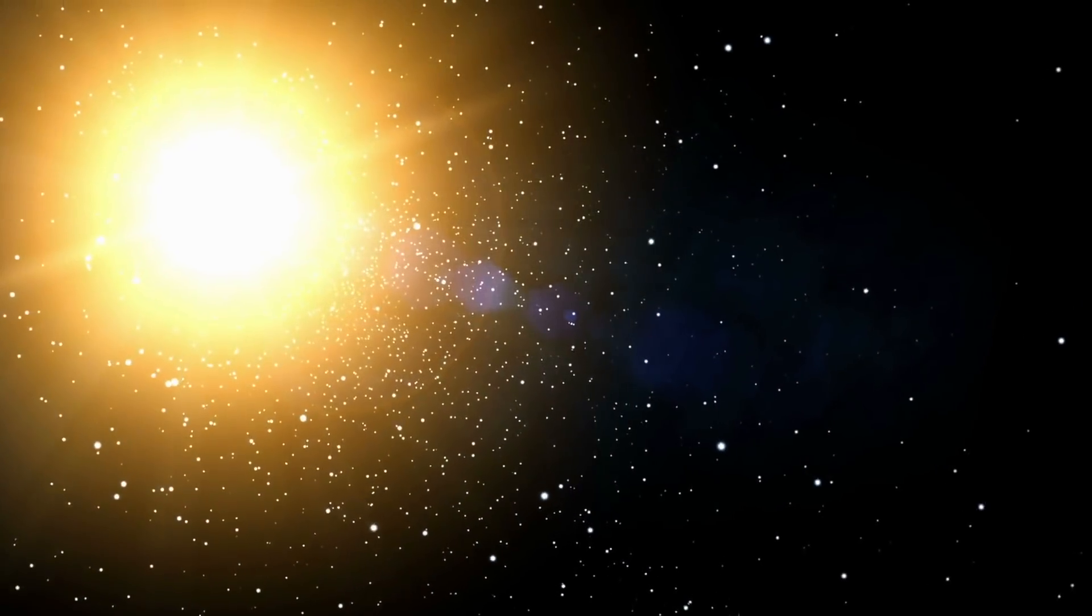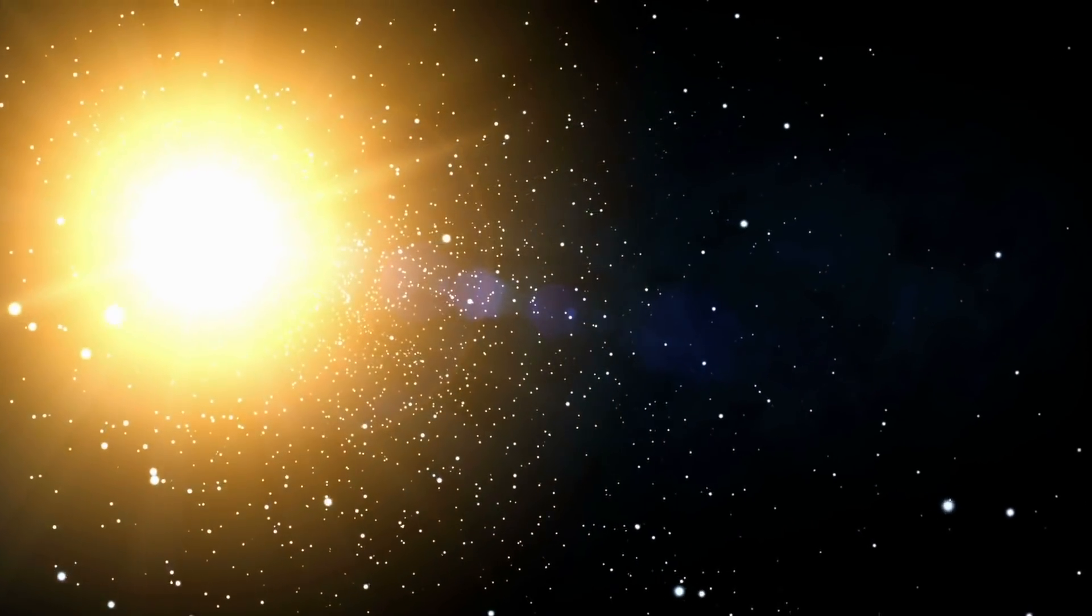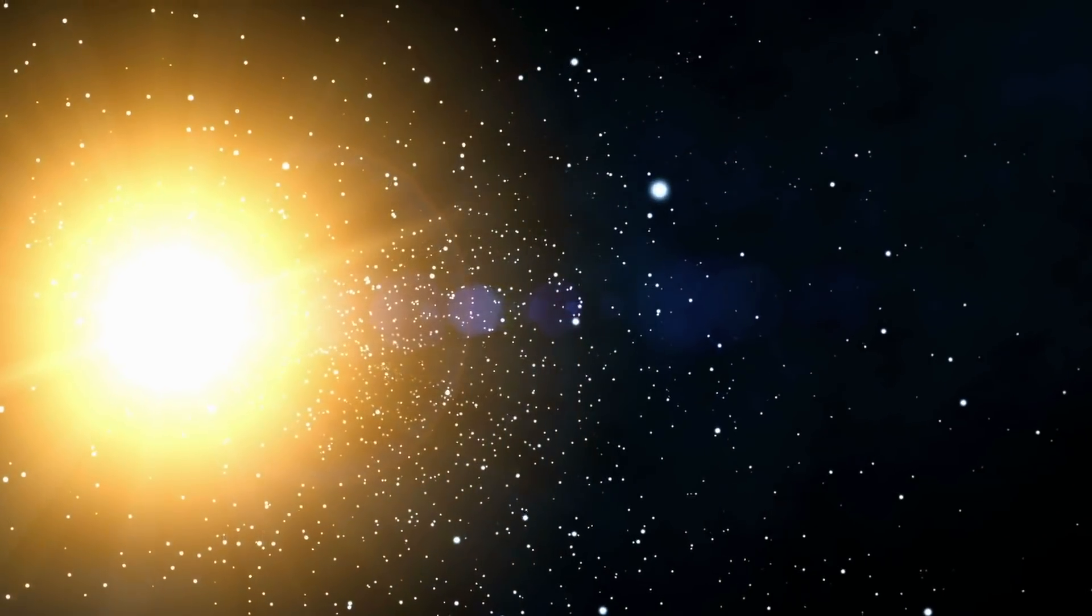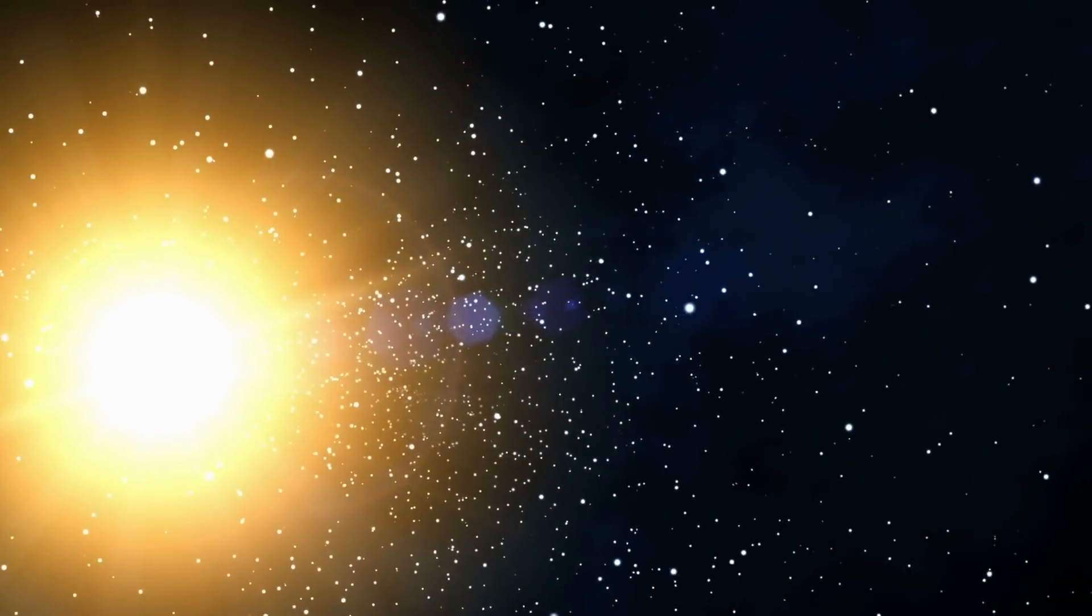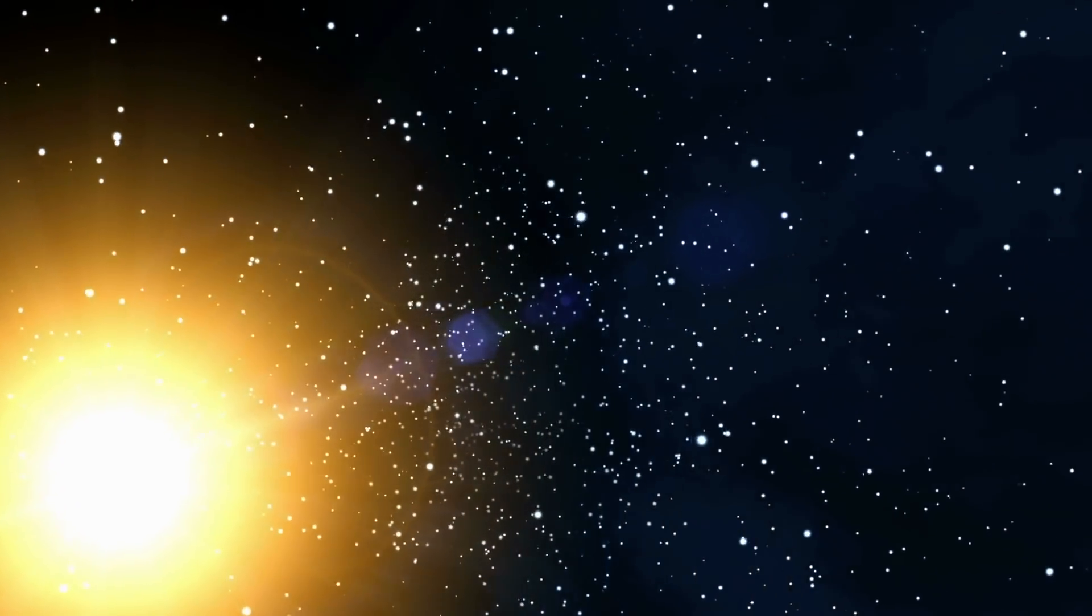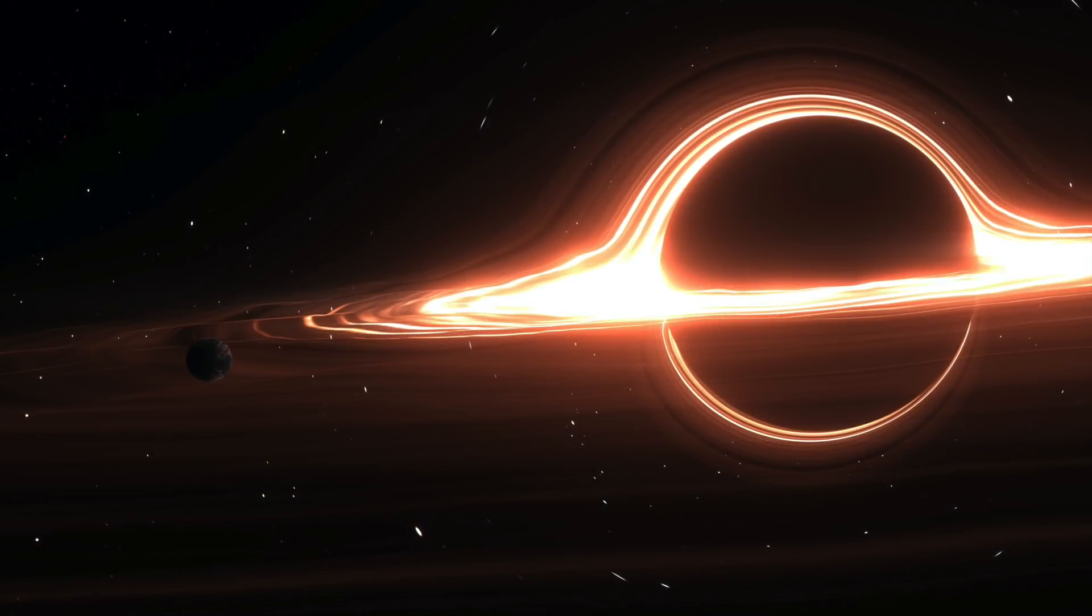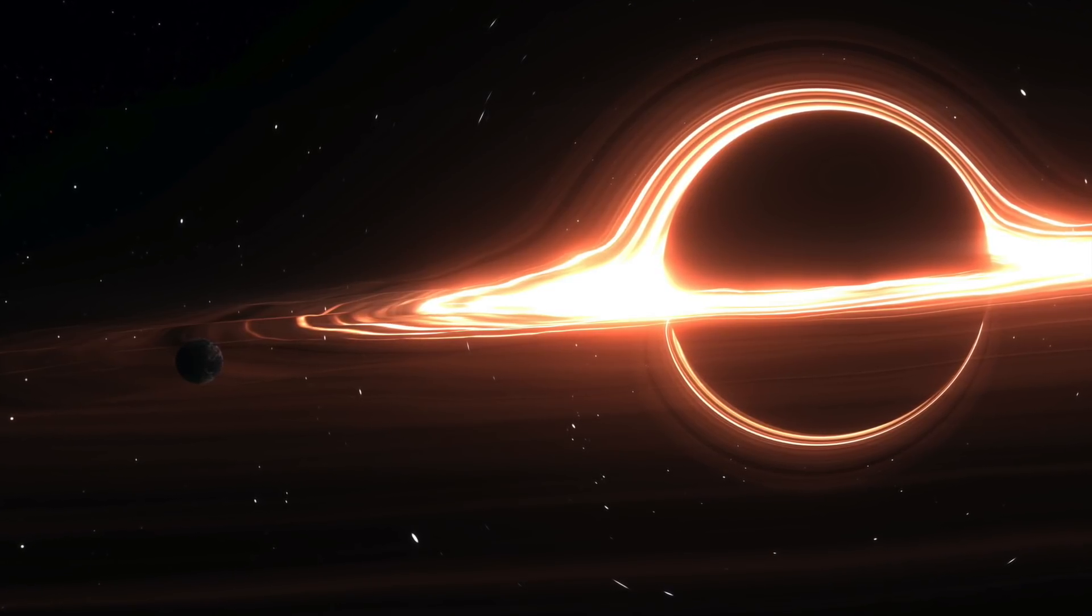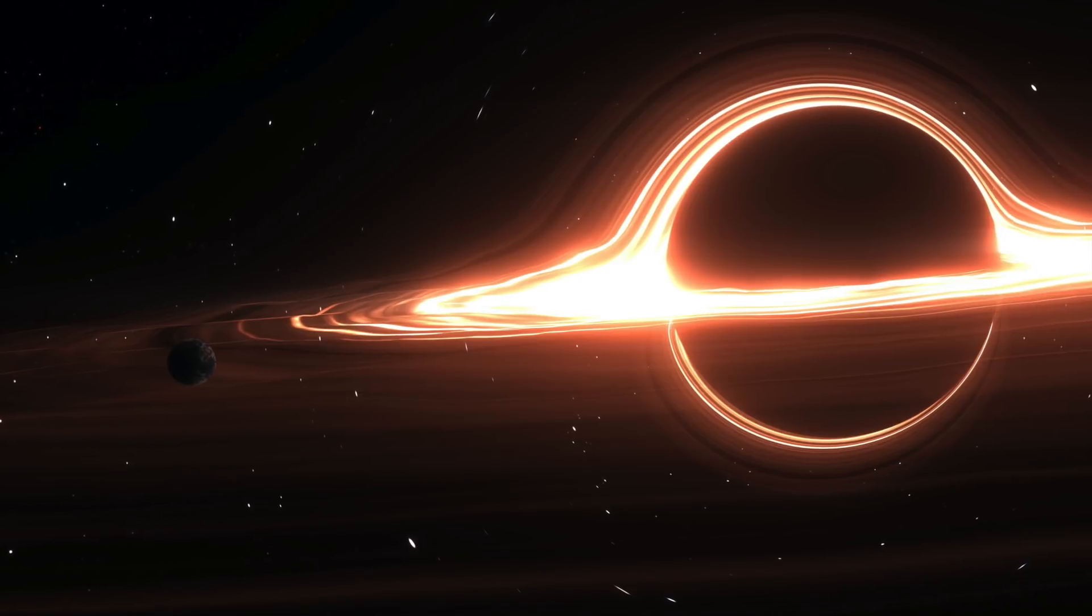We now know that J2157 is actually 34 billion times the mass of our Sun. For comparison, the Milky Way is home to the supermassive black hole Sagittarius A-star. Our black hole is a meagre 4.2 million solar masses, roughly 8,000 times less than J2157.